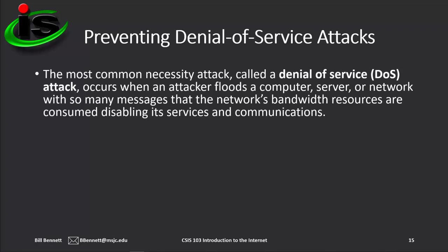A necessity threat disrupts normal computer processing or denies processing entirely. Programs used in necessity attacks work by reducing a computer's processing speed to intolerably low levels or by completely disabling the computer. The most common necessity attack, called a denial of service or DoS attack, occurs when an attacker floods a computer, server, or network with messages. The goal is to consume the network's bandwidth resources and disable its services and communications. Even if the attack fails to disable the server, the resulting processing delays can render a service unusable. Because a DoS attacker does not need to access an organization's server to attack it, websites are particularly vulnerable. The websites for Microsoft, eBay, Amazon.com, and many other companies have been victims of DoS attacks that resulted in service interruptions to their customers.